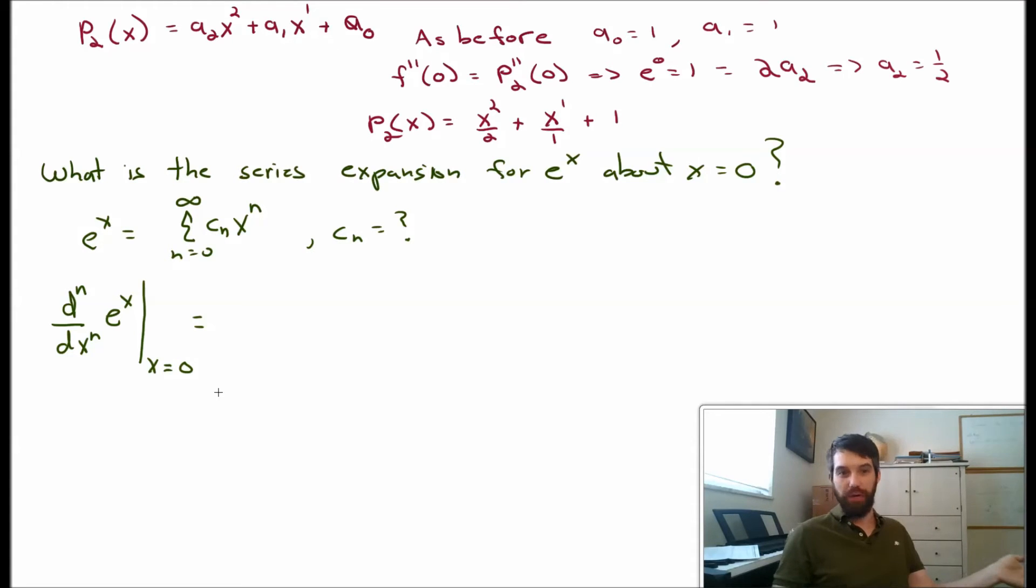So if I'm taking n derivatives, everything less than x^n is going to 0. So there's a whole bunch of 0s, 0 plus 0 plus dot dot dot.